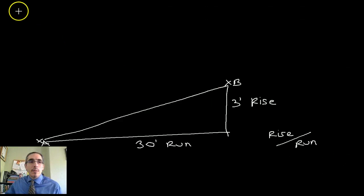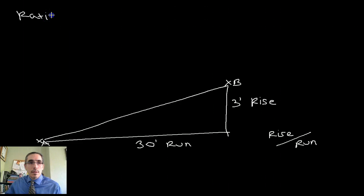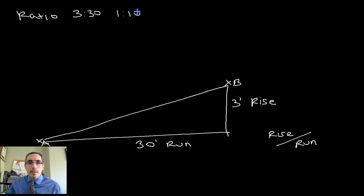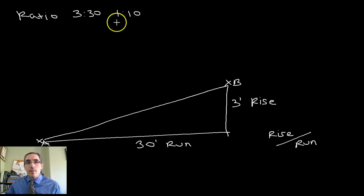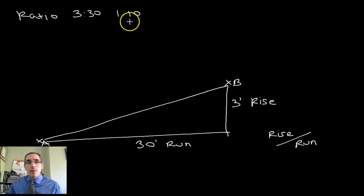So one way that we can describe slope is as a ratio. In this case, we would say 3 to 30, more often wanting to reduce that to 1 to 10. And the way we'd read that is 1 foot of rise for every 10 feet of run. Usually when we write it, always when we write it as a ratio, we want both units to be in feet. But we can reduce it so that the number on the left, the rise, is reduced to 1. So that's one way of describing what's happening along this path.